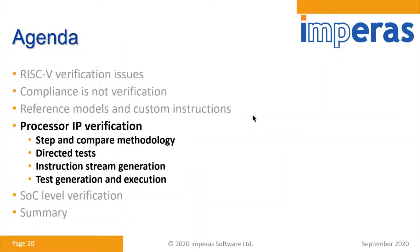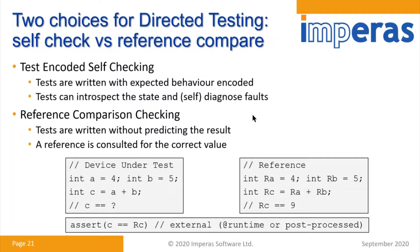Now let's focus on processor IP verification and how processors are verified. There are several choices when developing your hardware DV methodology. First: are you going to use directed testing or random testing? If directed testing, do you use a self-checking methodology or a reference compare? If self-checking, you write the test so you know what the behavior is, introspect it, and the test passes or fails on its own — very good for relatively simple things. But for more complex things with asynchronous nature, it's very hard because sometimes you don't know when something is going to happen.